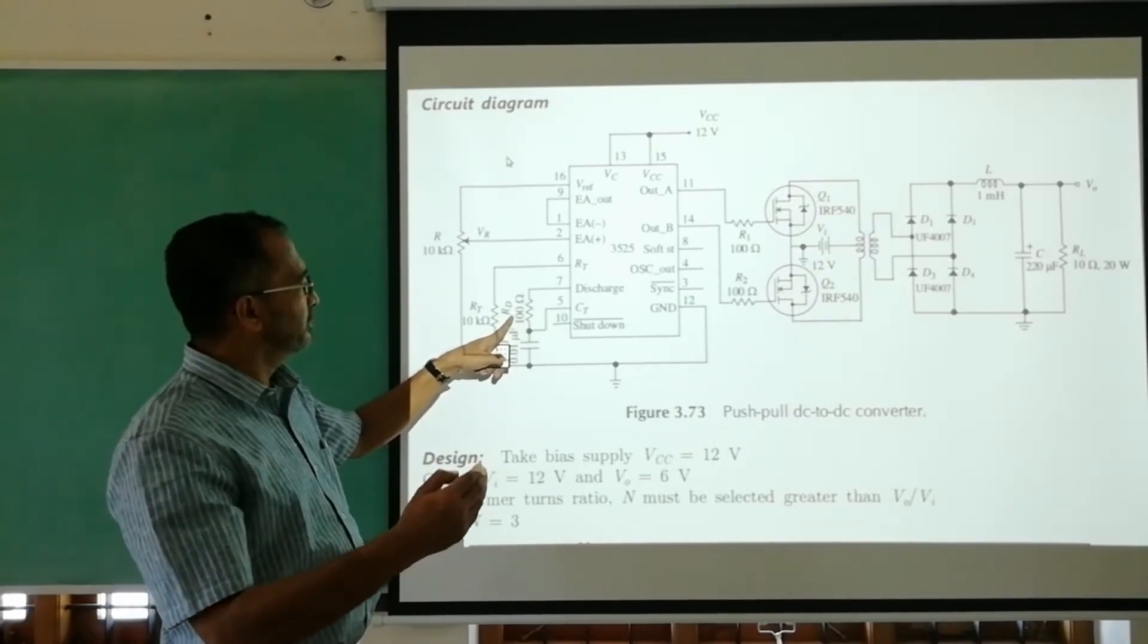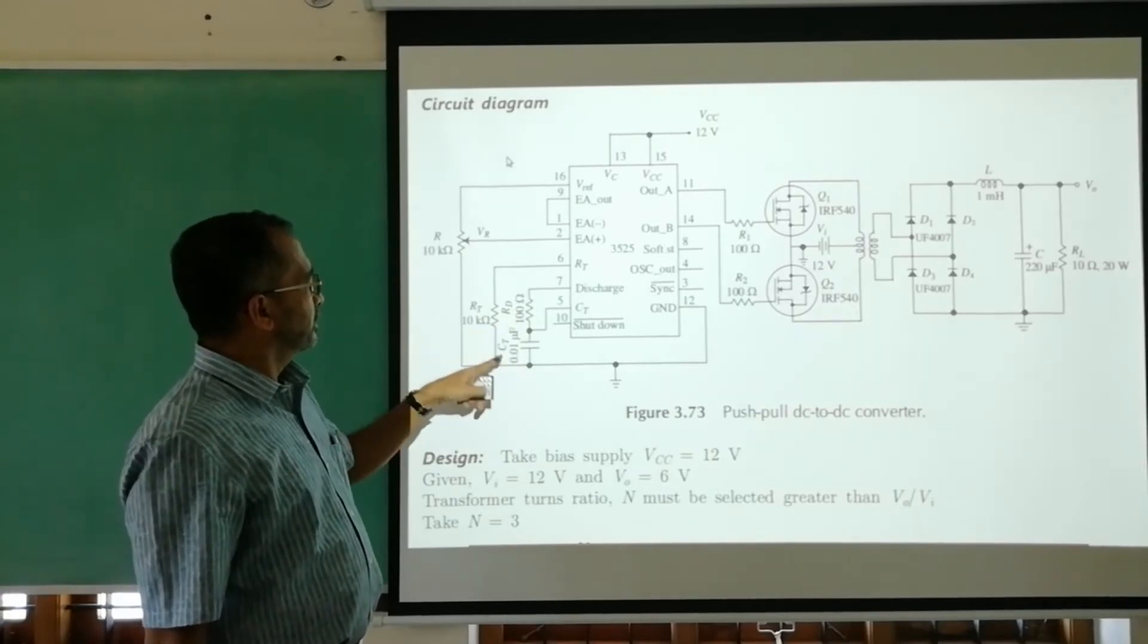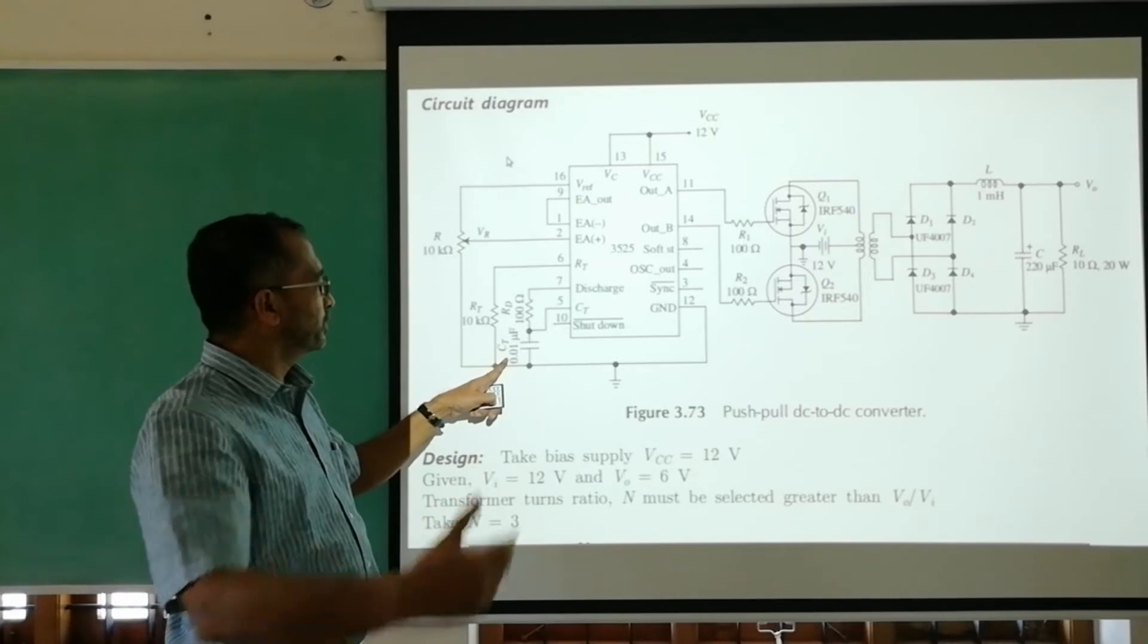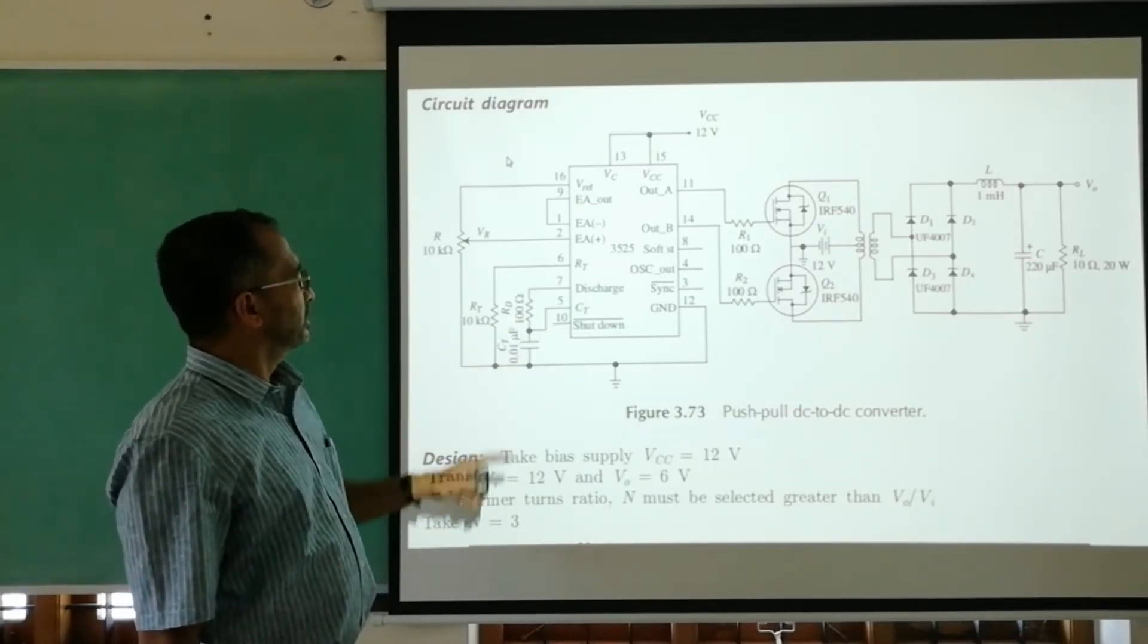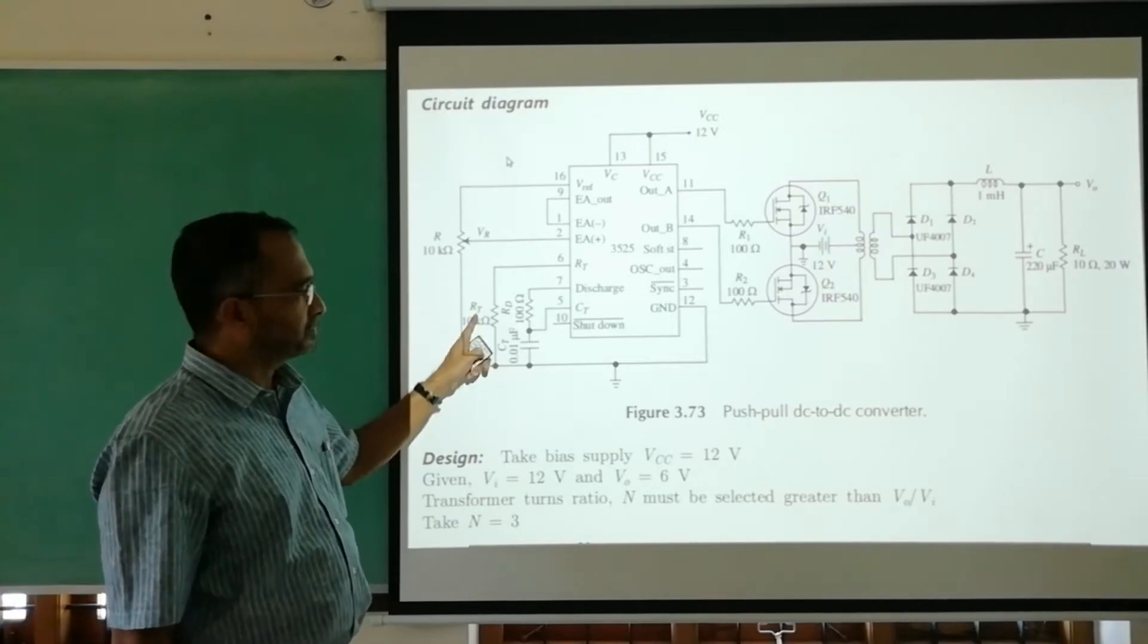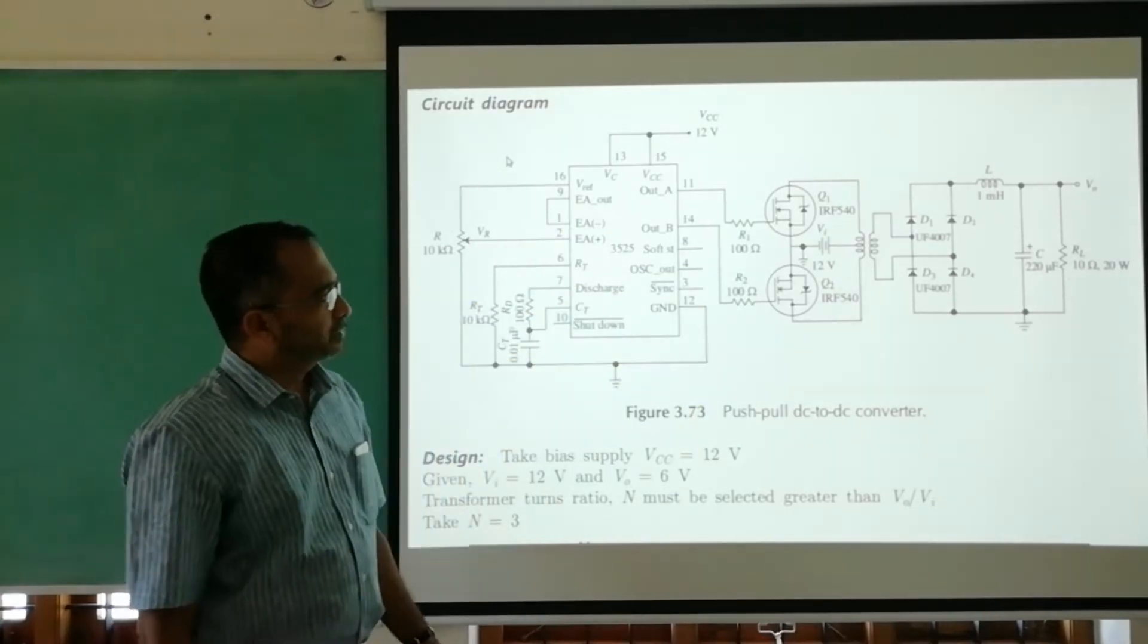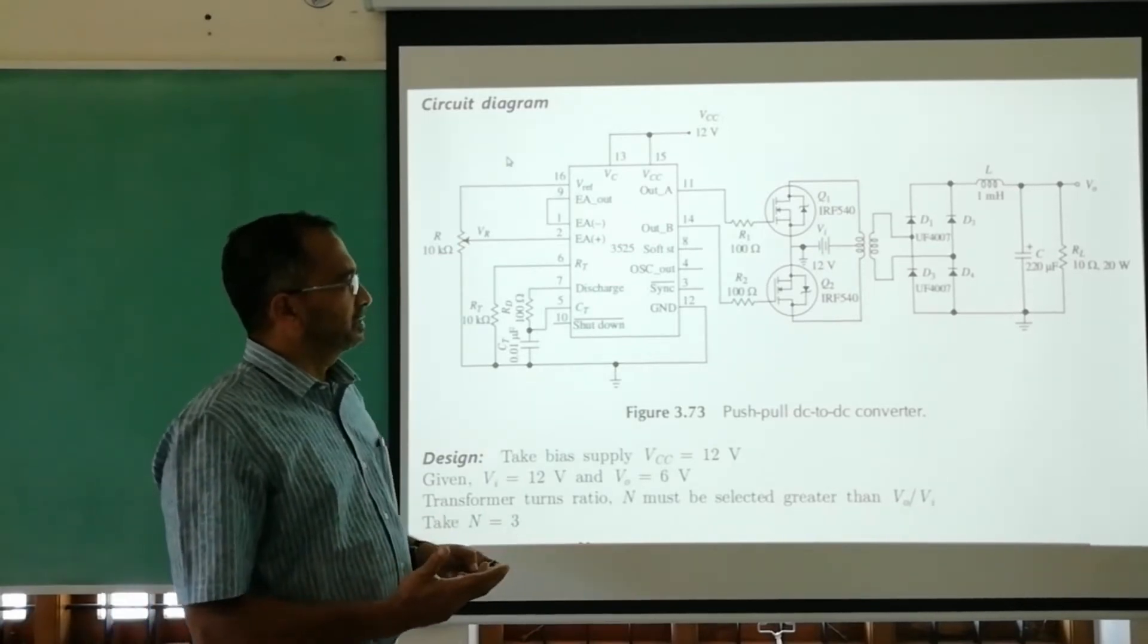RD is permitted to range from a few ohms to 500 ohms, so we select 100 ohms. CT can vary from 0.001 to 0.2 microfarad. From these two we can get RT from the equation. The current limiting resistances R1 and R2 connected at the gates of MOSFETs are selected as nominal values.